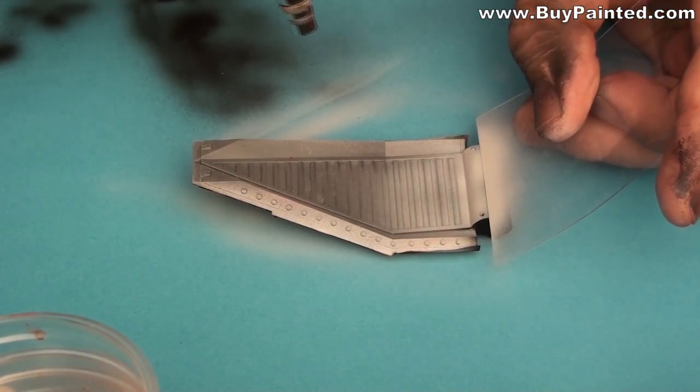I undercoated inner side of the doors with Vallejo Grey primer. I painted the interior with Vallejo sand paint.